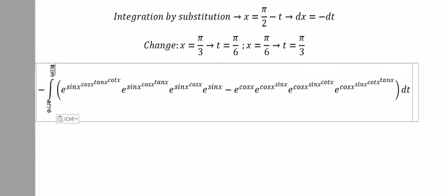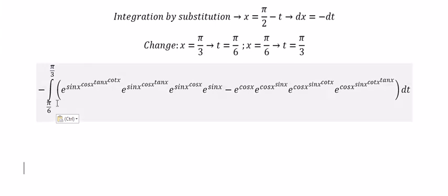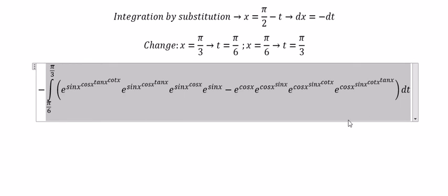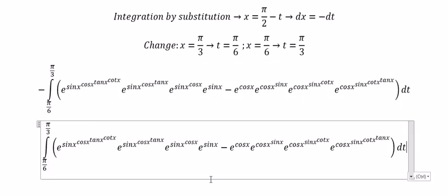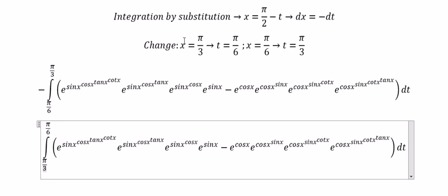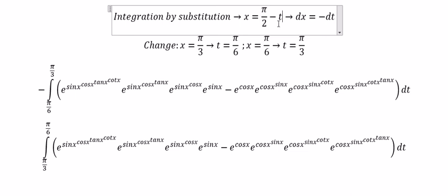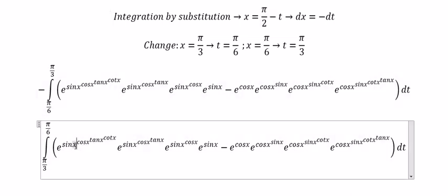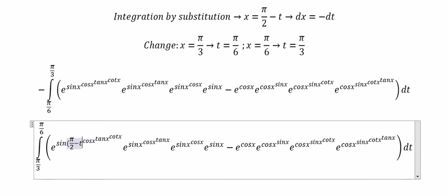Because π over 6 is smaller than π over 3, we can swap the top and the bottom together.